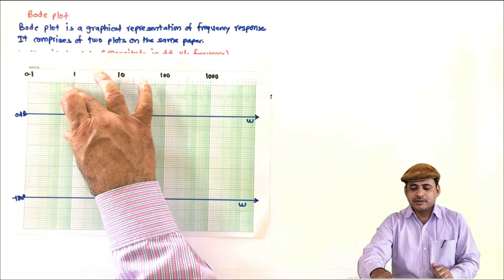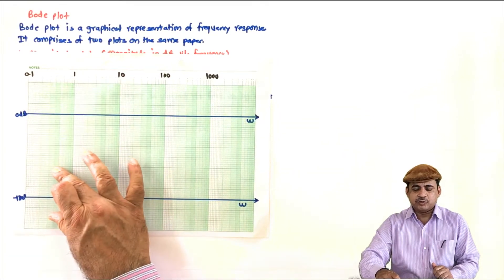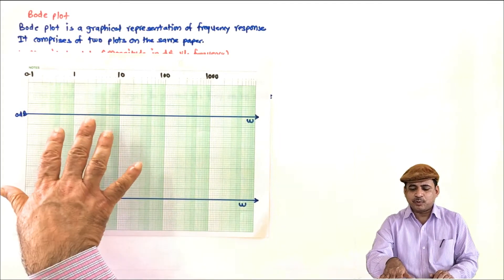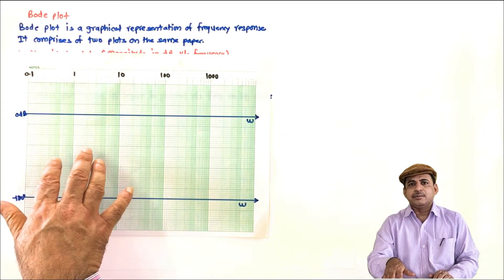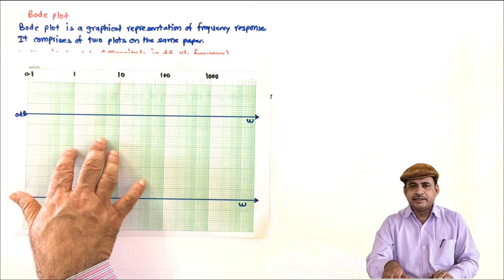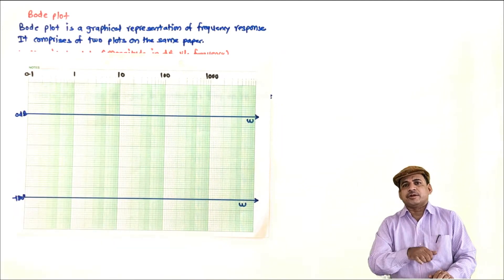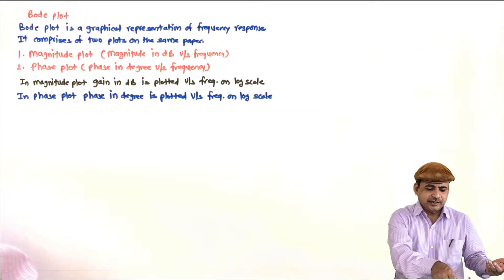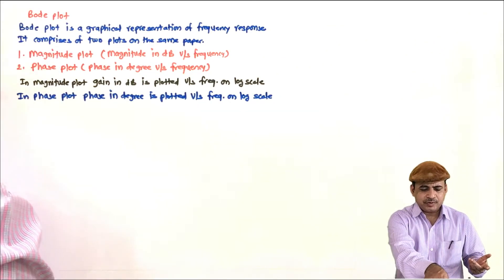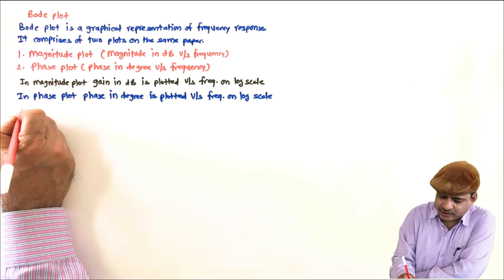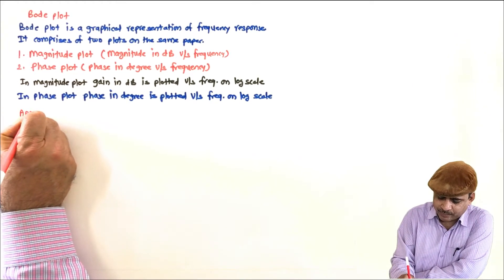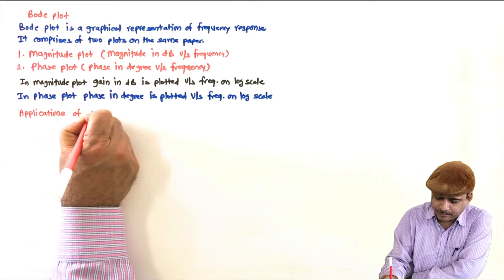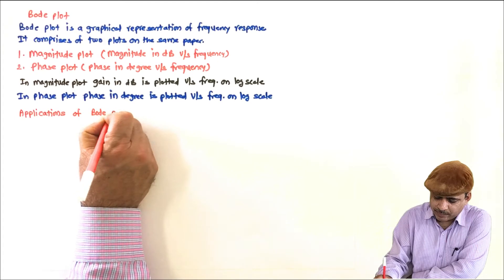This portion is used for the magnitude plot and this portion is used for the phase plot. Later on we will see how to plot this graph and also how to determine stability from the Bode plot. But now let us see its applications. So let us see some applications of Bode plot.